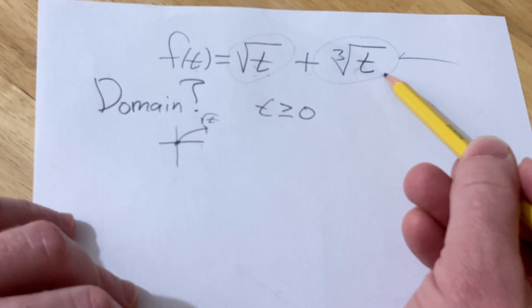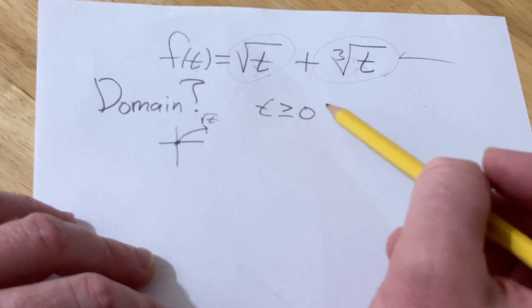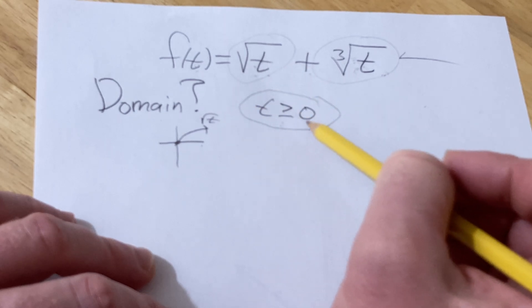And again, this one is of no consequence because everything is valid here. So basically, the domain is all of the t's such that this condition is true.